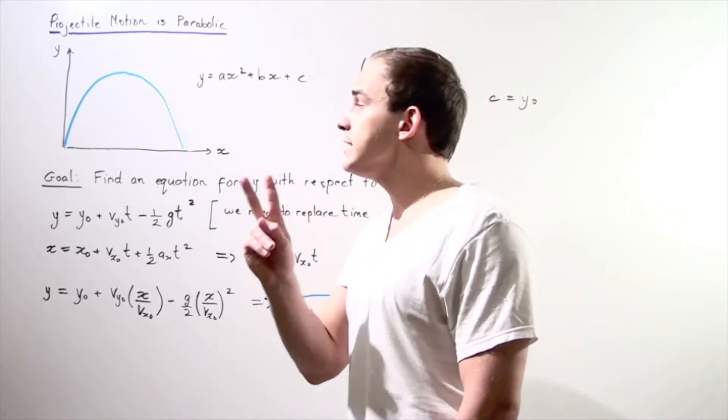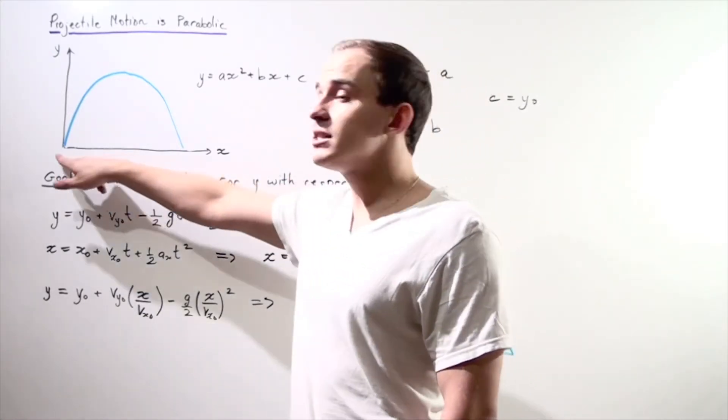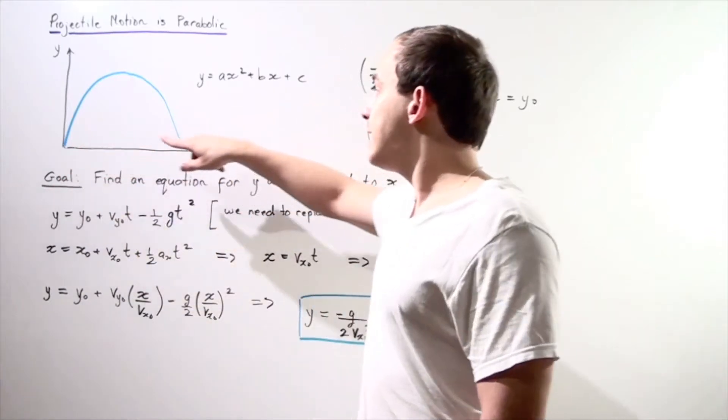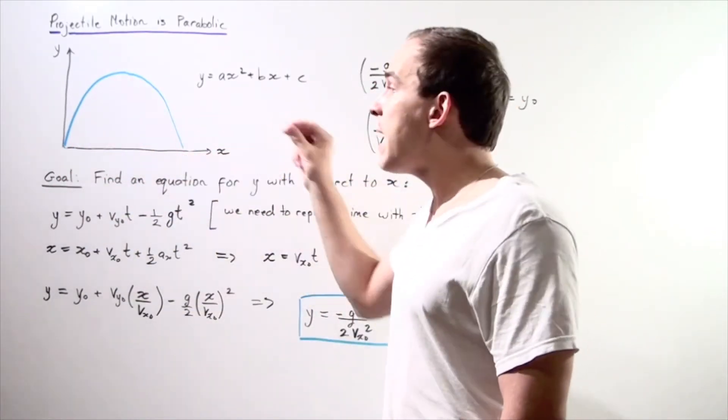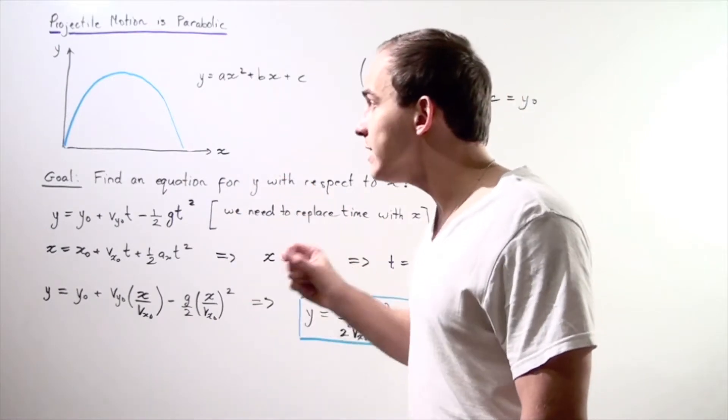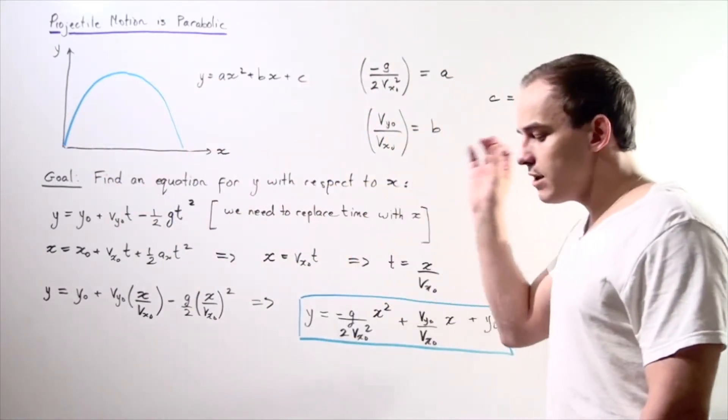So what this claim is saying is when our object is traveling along the xy plane in two dimensions—if it begins at the origin and ends at this position here along the x-axis—the pathway it will create will be the following parabola.